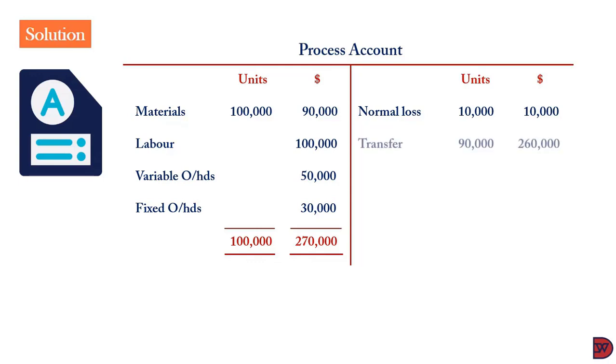When we come to the credit side, normal loss: 10,000 units. It has a saleable value now of $10,000. The transfer value, that is the finished goods: 90,000 was actual output at a cost of $260,000. 2.89 cost per unit multiplied by the output of 90,000, leading to 100,000 units at a cost of $270,000.